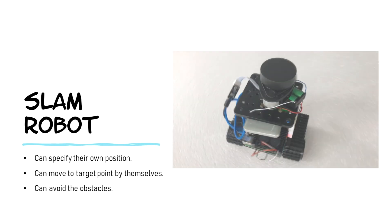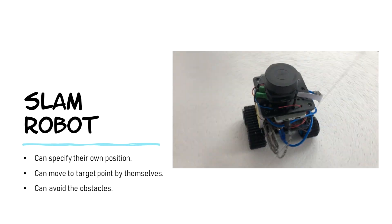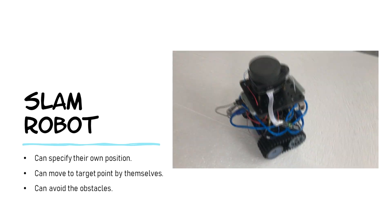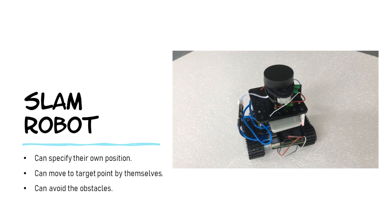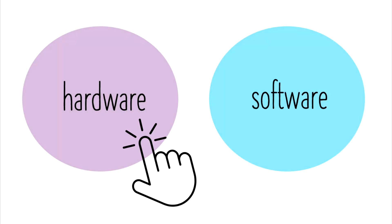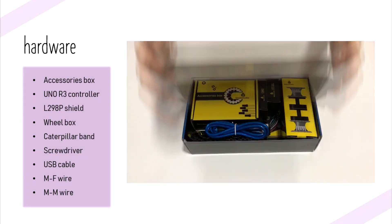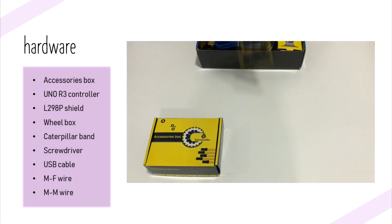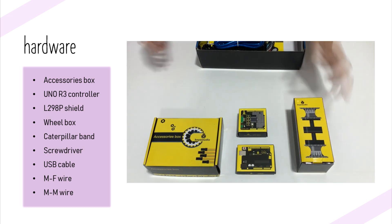This is the overall overview of our SLAM Robot. We separate it into two main parts. The first part is hardware, and the second part is software. First, we will talk about the hardware part and show all the components that we use in the SLAM Robot.